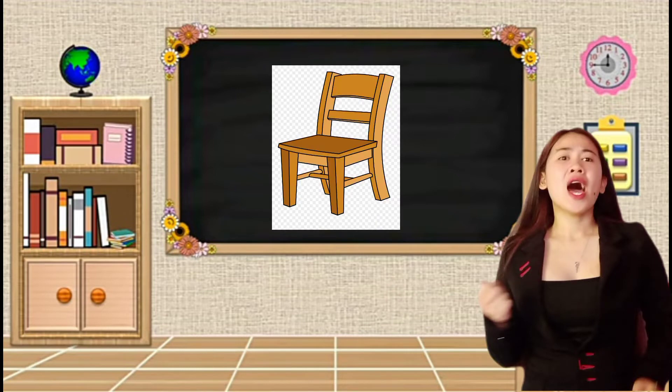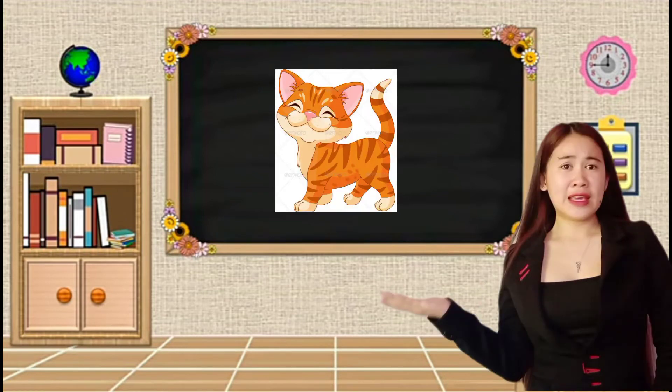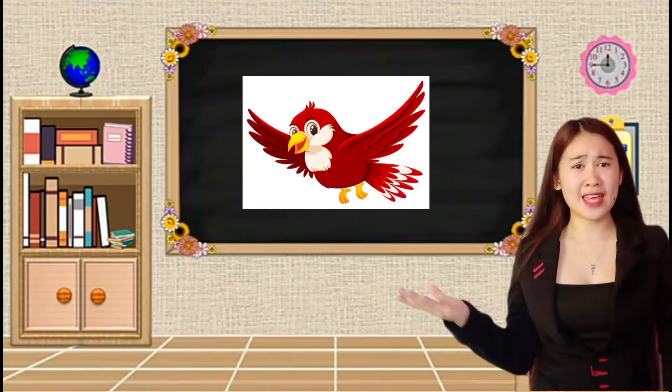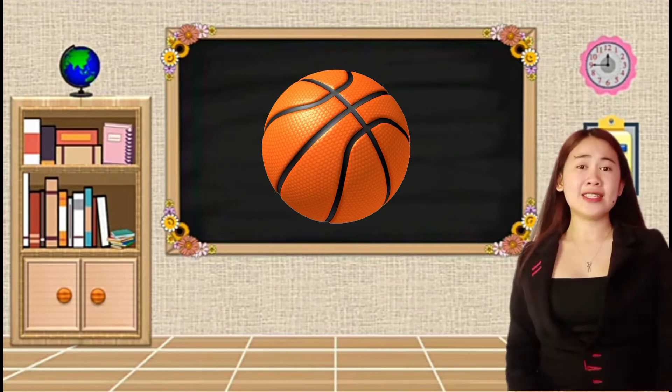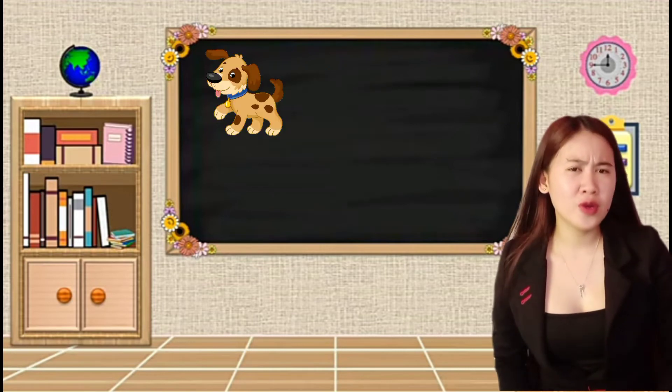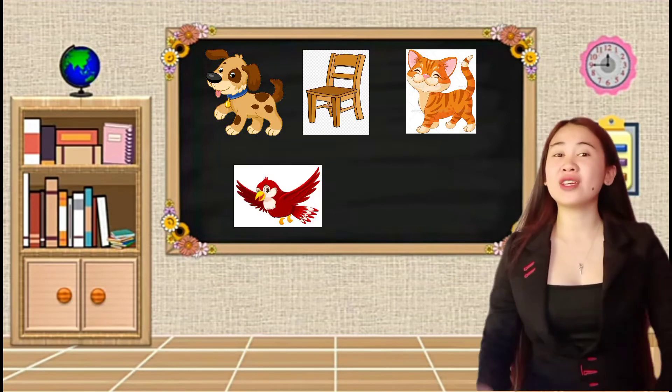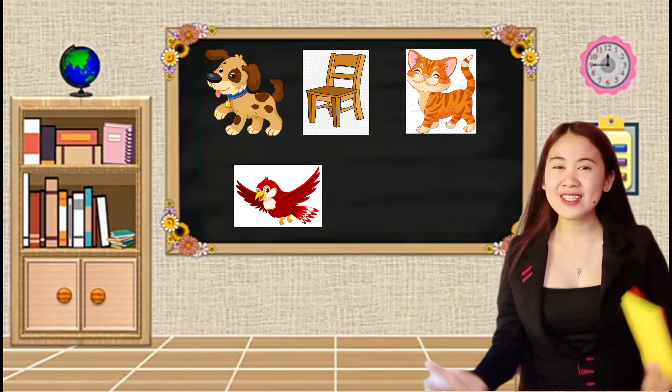How about this group two? Yes, a chair. And this group three? Exactly right. A cat. This one group four? Yes, a bird. And this one group five? That's it. This, it is a ball. Very good. I am very happy you were able to identify all those things.